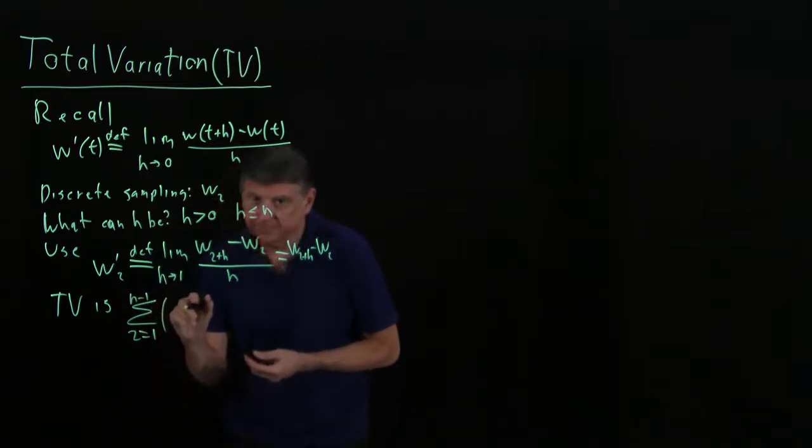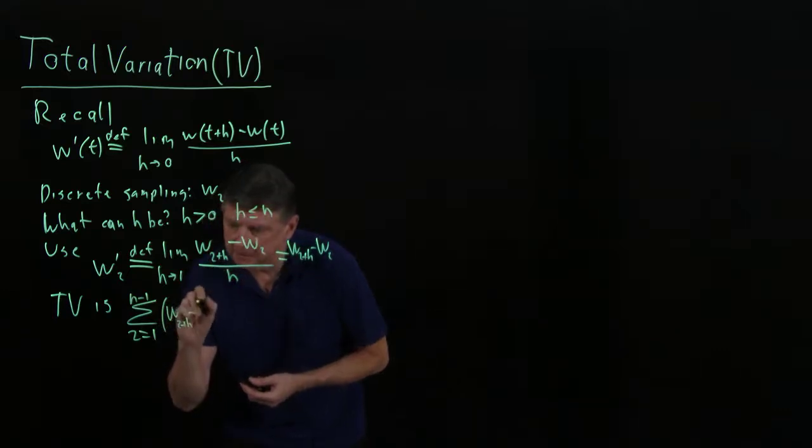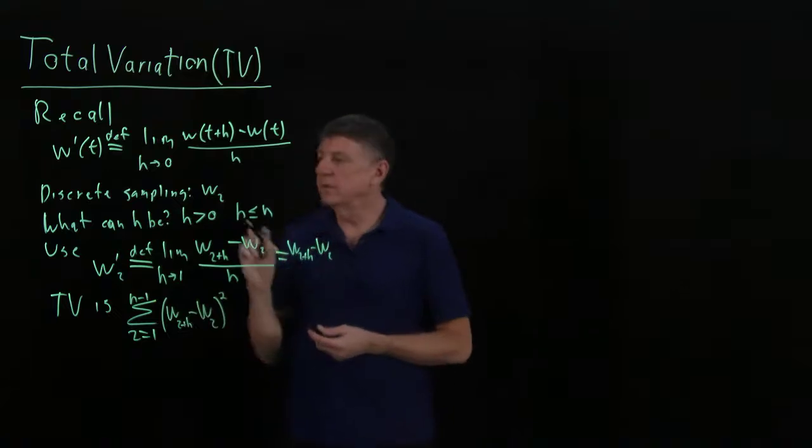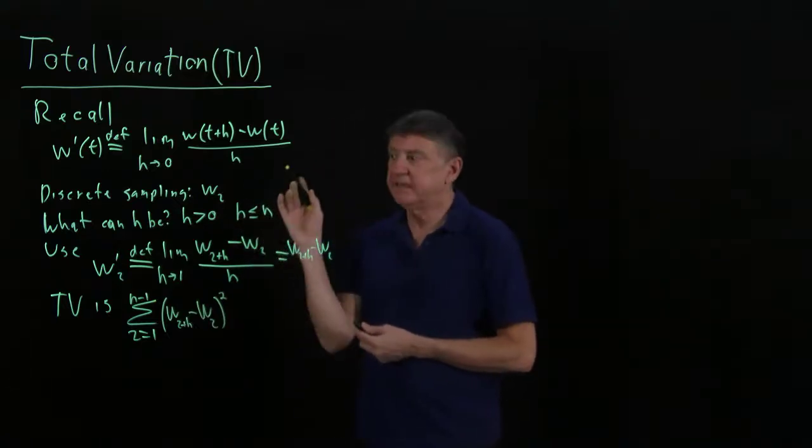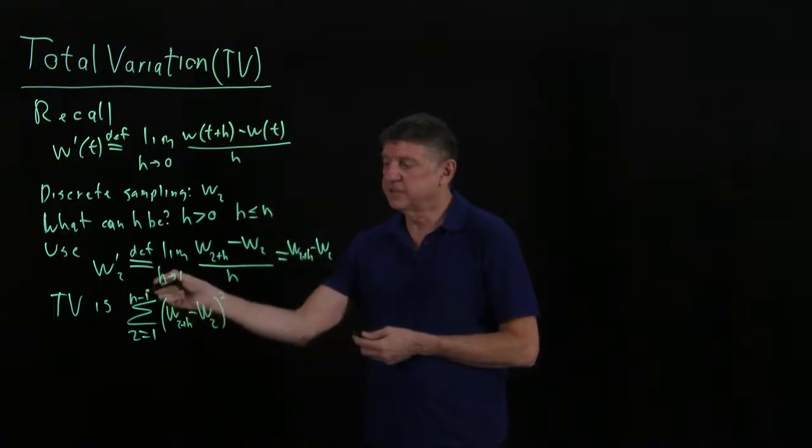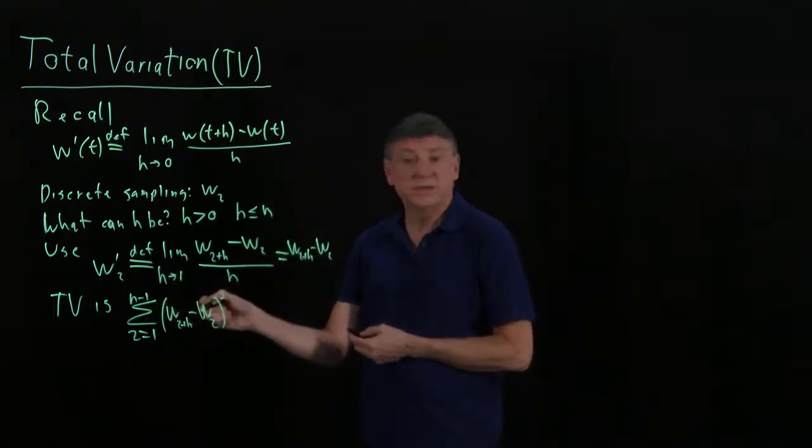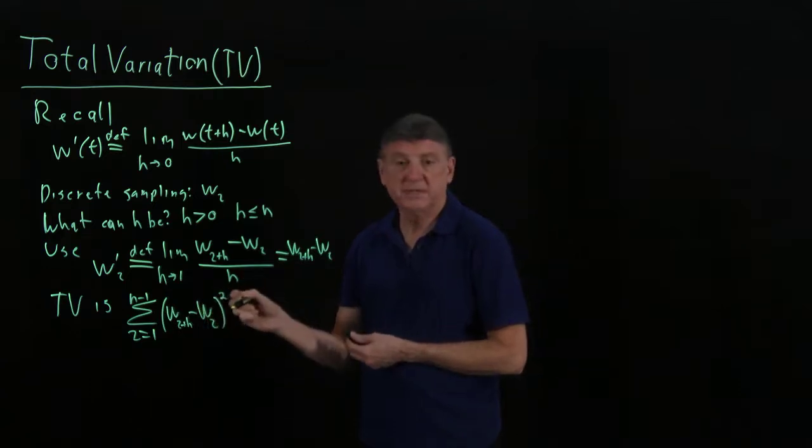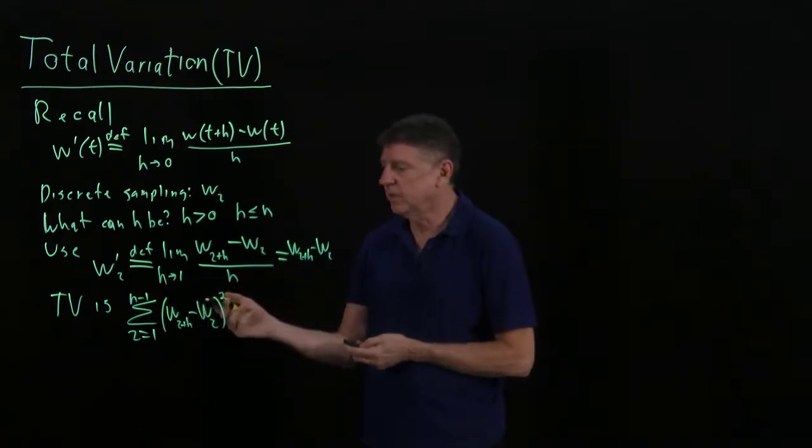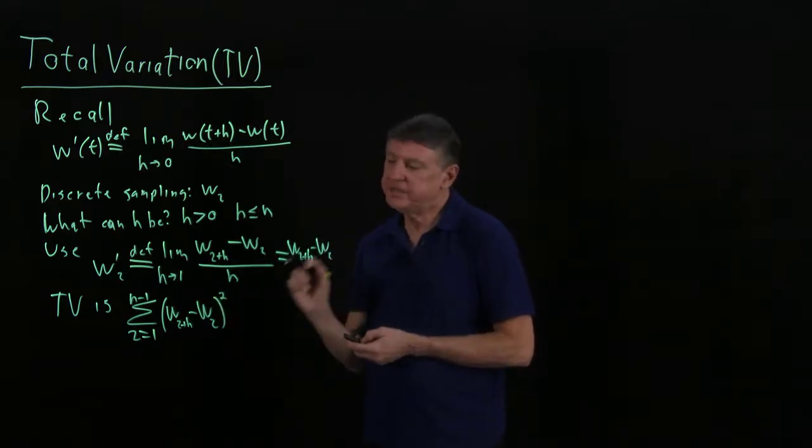Of wi plus h minus wi quantity squared. Because when we take that square, the integral of the square of the derivative, that turns into a sum, the limit, the integral turns into a sum, and then we simply take these and then we drop the dt because that's equal to one.